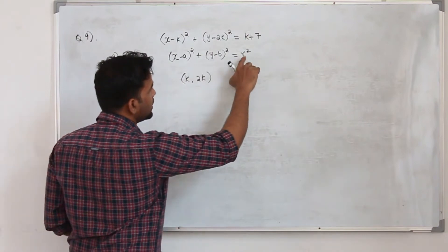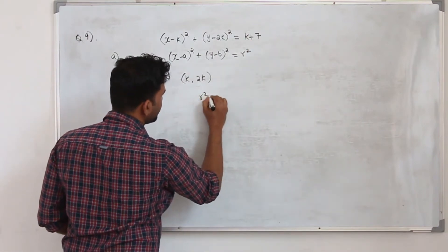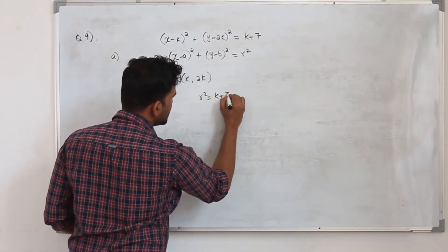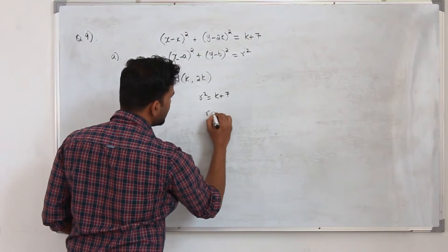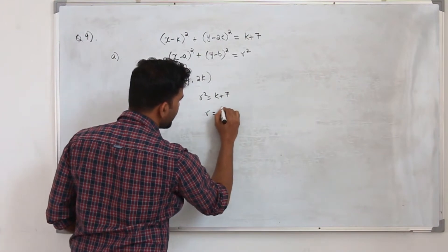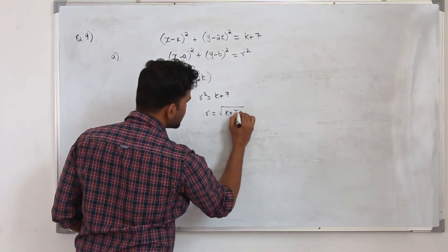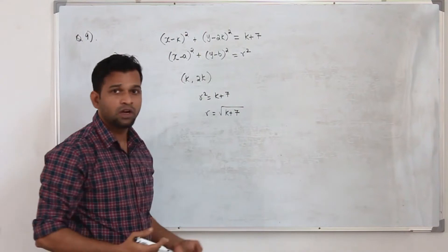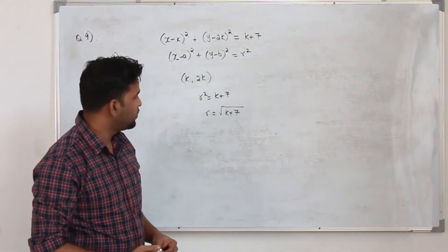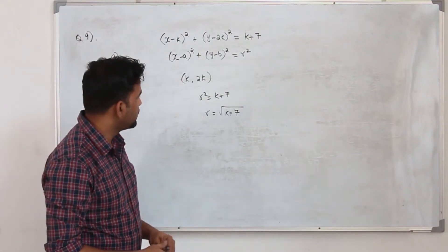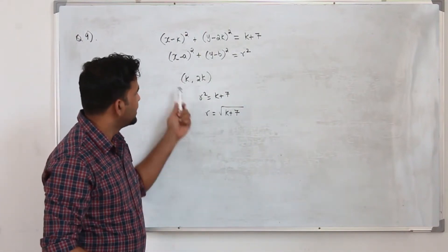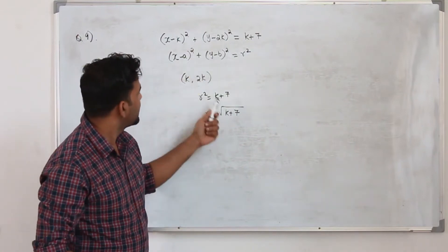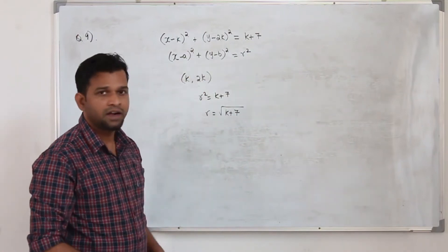The radius r squared is k plus 7, so your radius r is square root of k plus 7. Since the radius takes only the positive value, you don't need to put plus or minus. It's simple — straight away you can write the center and radius.